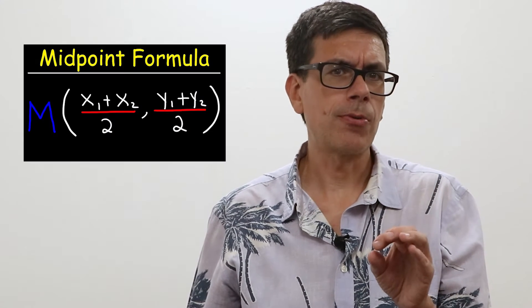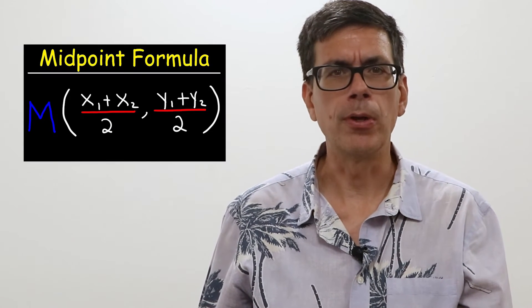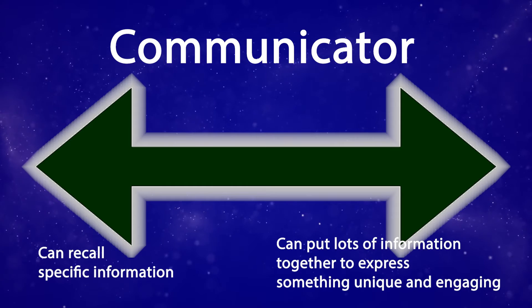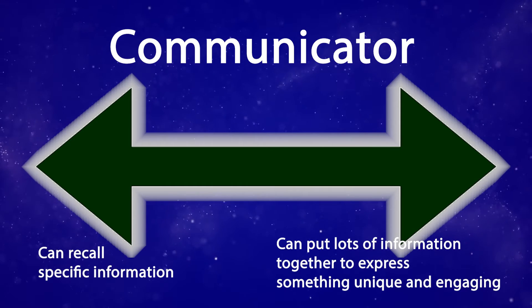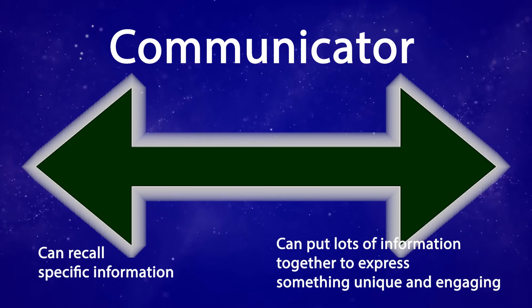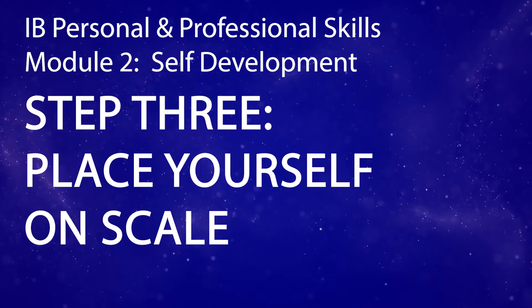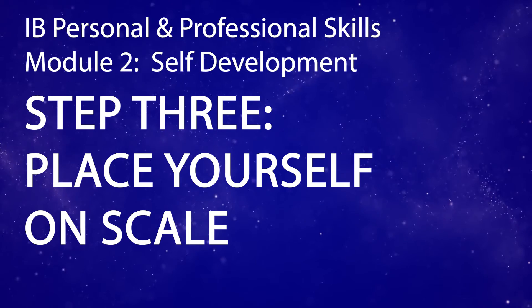Now imagine the behaviors of someone who is really weak in this trait, and then how would you describe someone who's kind of halfway between those two points? Here's an example of a scale that was developed by teachers a couple years ago for the trait 'communicator.'